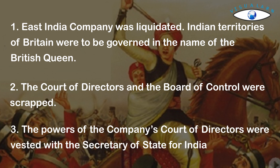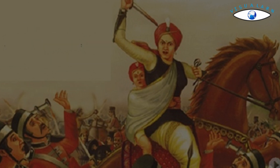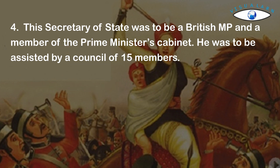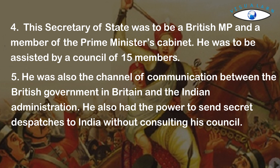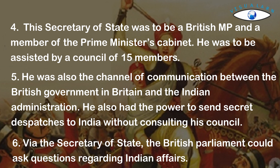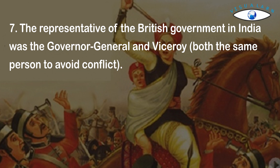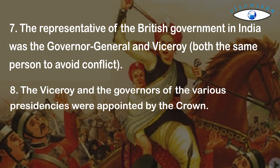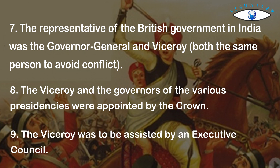The powers of the company's Court of Directors were vested with the Secretary of State for India. The Secretary of State was to be a British MP and a member of the Prime Minister's Cabinet, assisted by a council of 15 members. He was also the channel of communication between the British government and the Indian administration, and had the power to send secret dispatches to India without consulting his council. Via the Secretary of State, the British Parliament could ask questions regarding Indian affairs. The representative of the British government in India was the Governor-General and Viceroy, appointed by the Crown, and assisted by an executive council.